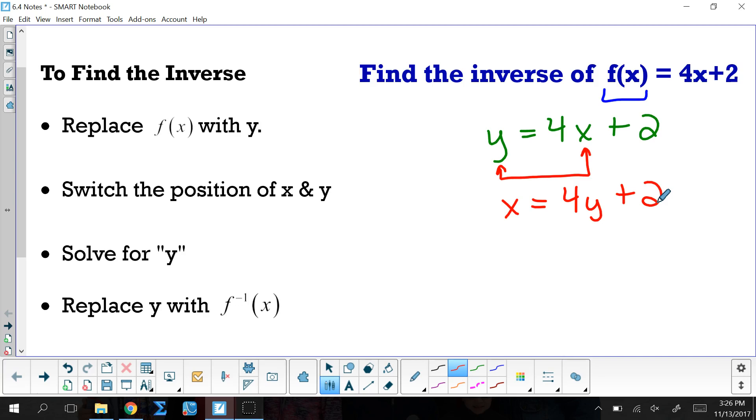Now what you're going to do is you're going to solve for your y in that function. It should not be solved for y already. You should have to actually do some work here. So I'm going to subtract 2. That gives me x minus 2 equals 4y. Then I'm going to divide everything by 4.